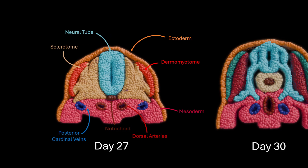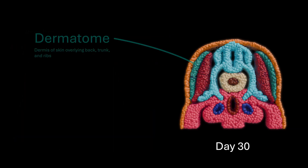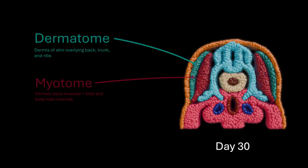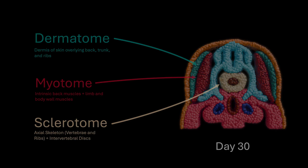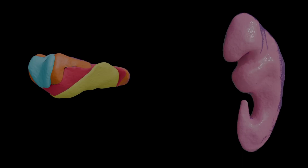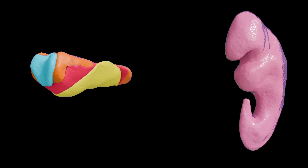Later, each somite splits into three parts: a dermatome for the future dermis, a myotome for skeletal muscles, and a sclerotome for vertebrae and ribs. And by week four, another transformation is already underway.